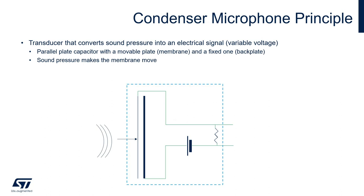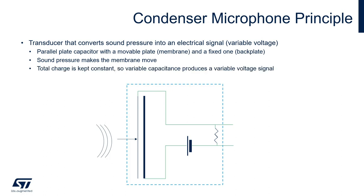Acoustic waves make the membrane move, modifying the distance between the plates, while the total charge is constant. This generates a change in the capacitance, which is reflected to a variation of the voltage measured at the output. This signal represents the output of the microphone, and it's proportional to the sound pressure impinging the membrane.